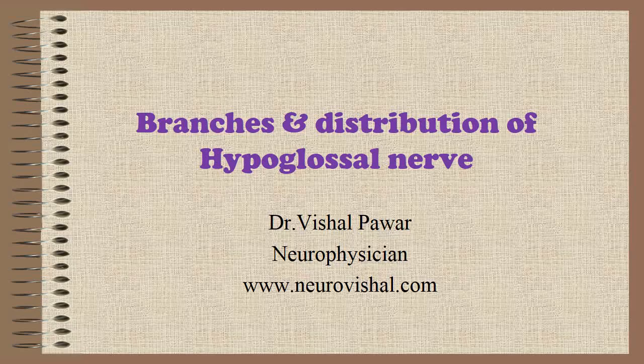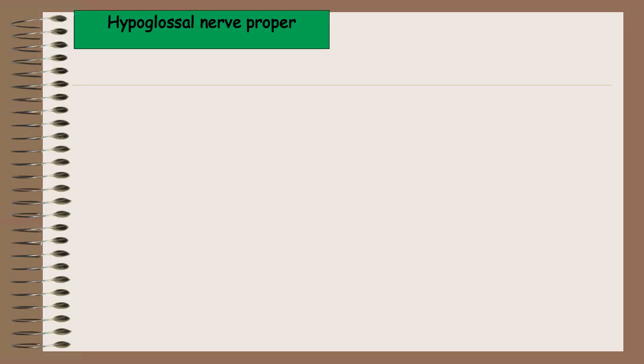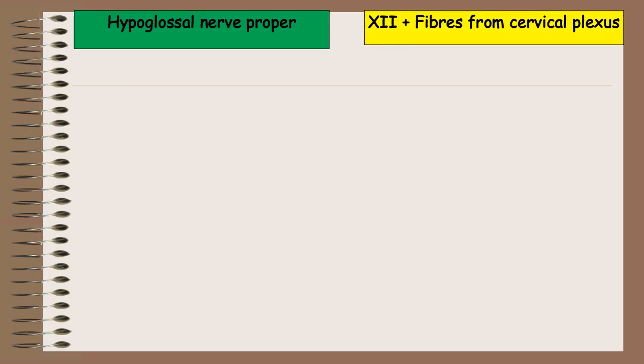In this video, I am going to discuss the branches and distribution of the hypoglossal nerve. There are two groups of fibers in the hypoglossal nerve: first, the hypoglossal nerve proper, and second, fibers from the cervical plexus traveling through the hypoglossal nerve.